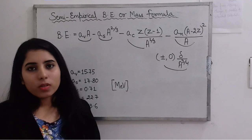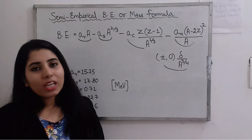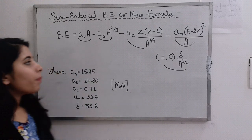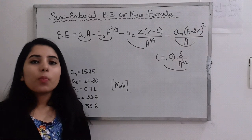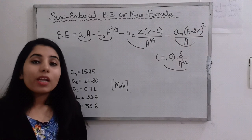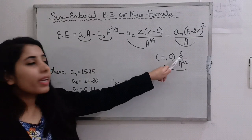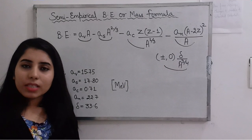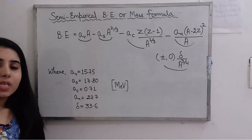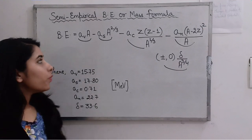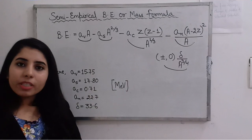The value of the pairing energy depends on whether the number of protons and neutrons are even or odd. If it is even-even, there will be one value; odd-odd there will be different values; even-odd there will be different values. It depends on the number of protons and neutrons. One question will be solved to make this clear - you will know how to solve the question and how to put values in the formula.